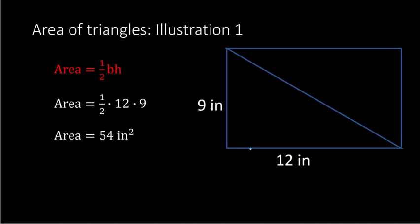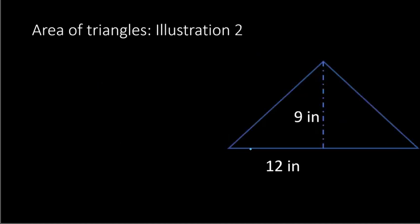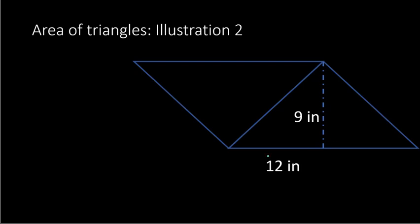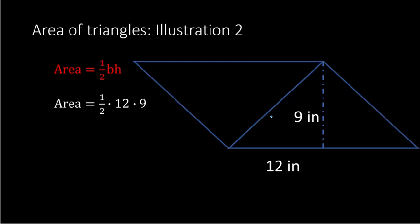This works for right triangles, but also for any type of triangle. Here we have a base of 12 inches and a height of 9 inches. If we imagine duplicating this triangle and placing that duplicate on top, we get a parallelogram where the base is 12 and the height is 9. For the parallelogram it would be 12 times 9, but for the triangle it's 1 half of that. So we do 1/2 × 12 × 9. 1 half of 12 is 6, and 6 times 9 is 54, so the area is 54 inches squared.